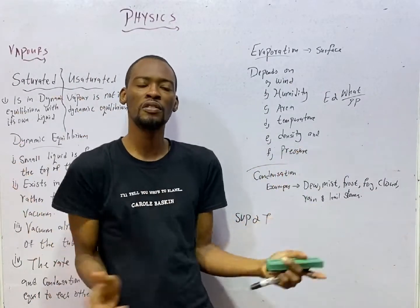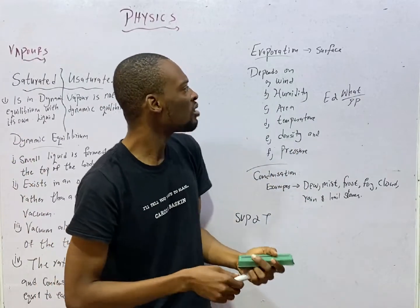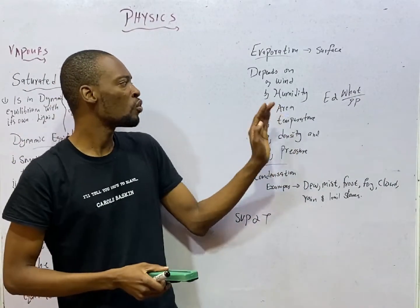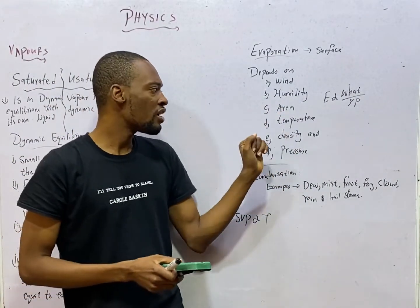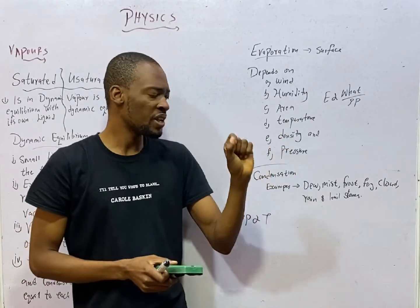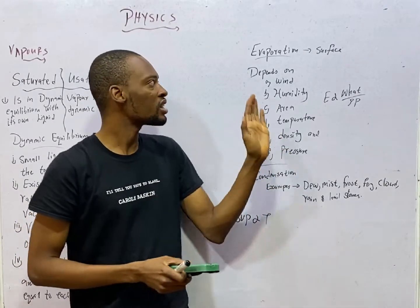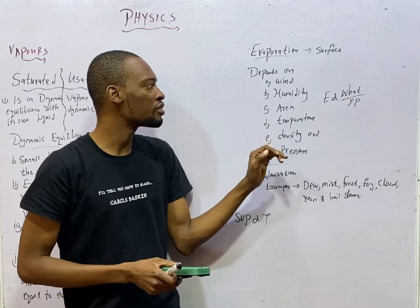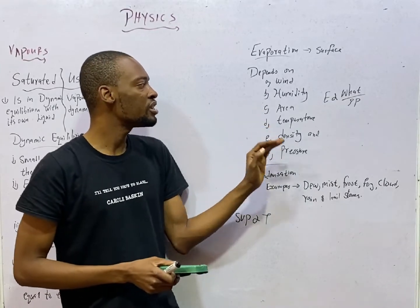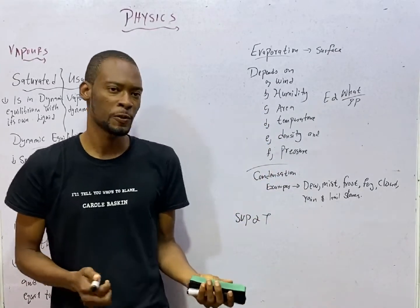Now, evaporation depends on wind, humidity, area, temperature, density, and pressure. These are factors that affect evaporation. Wind, humidity, temperature, density, and pressure.